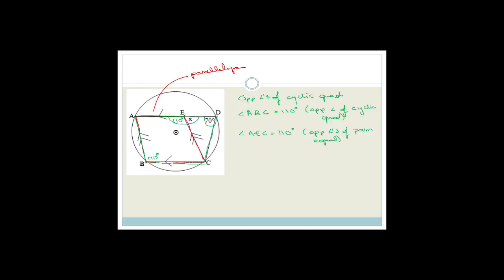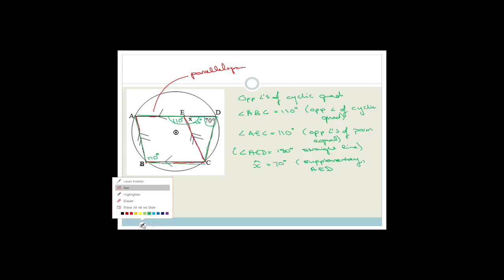So this angle is 110 degrees. Can we get X? Yes, we can, because this is a straight line and all angles on a straight line add up to 180 degrees. Angle AED equals 180 degrees (straight line). Therefore angle X equals 70 degrees, because it is supplementary — it is on line AED. This is quite nice because it also shows that these are base angles of an isosceles triangle, and you can continue from there.